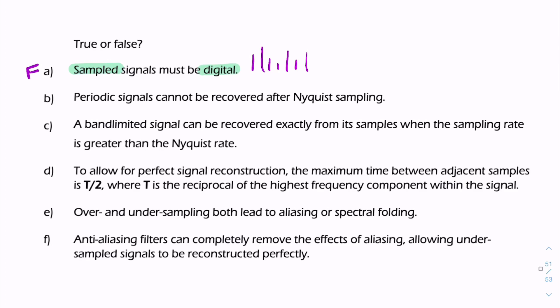Second statement: periodic signals cannot be recovered after sampling. Now remember, a periodic signal will have a discrete spectrum. The spectrum of a periodic signal will be discrete. Now a discrete spectrum, by definition, its highest frequency content will also be a discrete component. So f max will be a discrete frequency component.